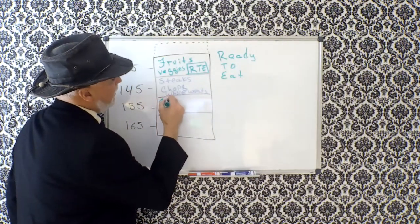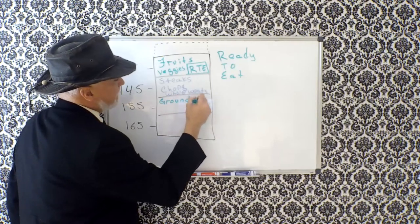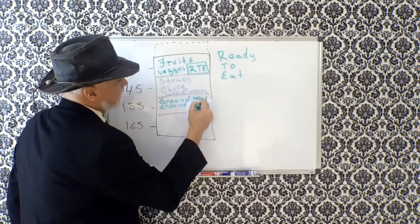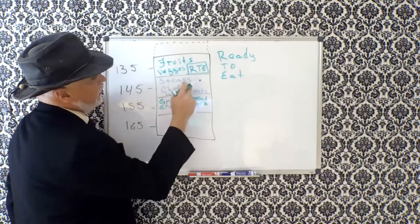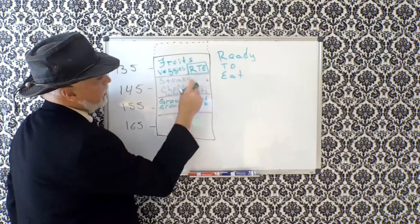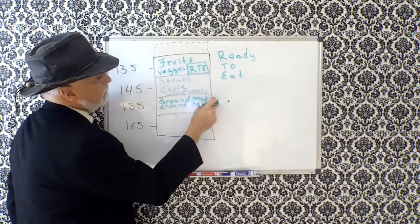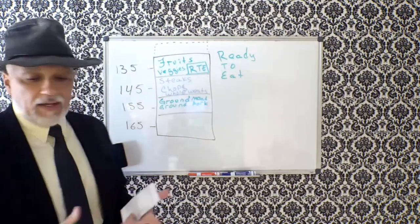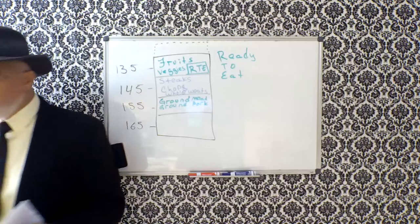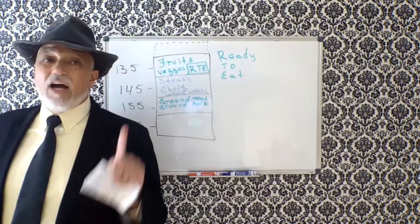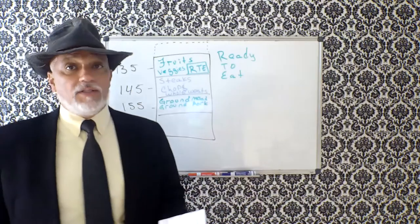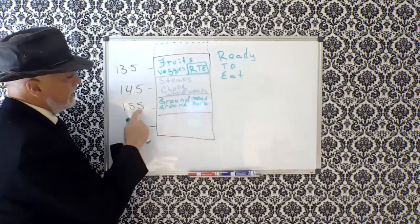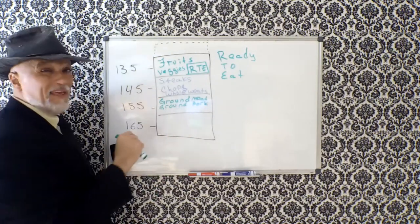155, we're looking at ground meat, ground pork. Now, why does it, like, a whole pork versus a ground pork, a whole steak versus ground burger meat, why is there a 10 degree difference? Because when you buy a container of ground meat, it's not one cut of meat, it's many cuts of meat. So in order to help reduce or eliminate the likelihood of foodborne illness, these are cooked a little higher than those.